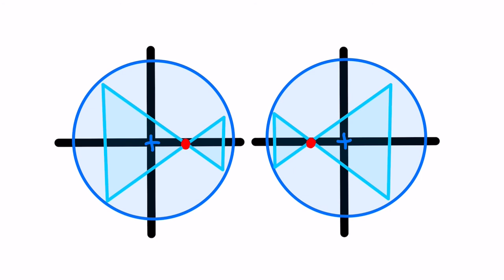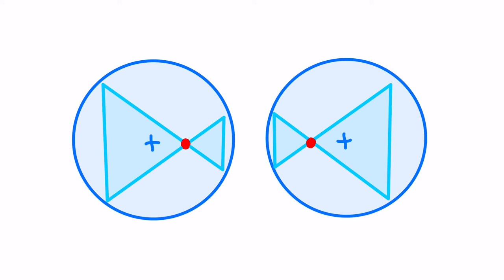Looking back at our previous examples, the OC of the right and left lenses needs to be on opposite sides of the geometric center. The right lens needs to have the OC on the right, and the left lens needs to have it on the left.